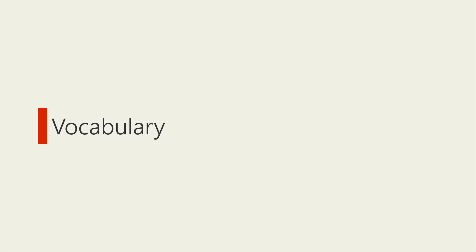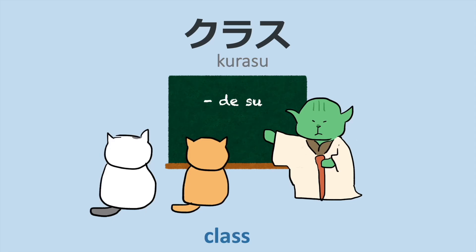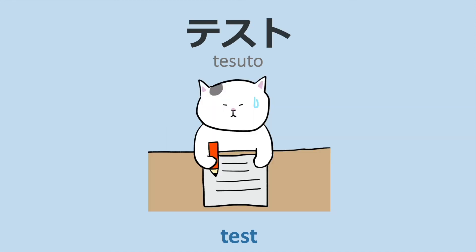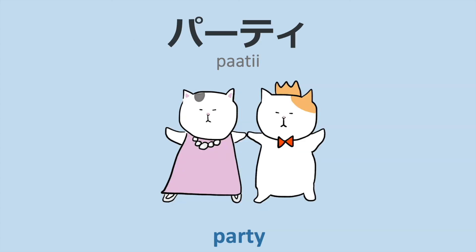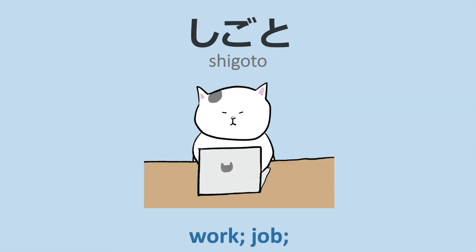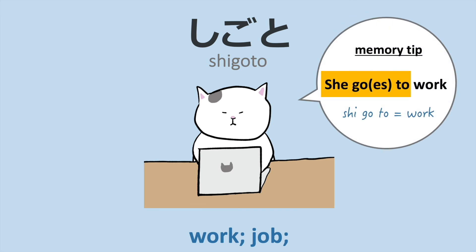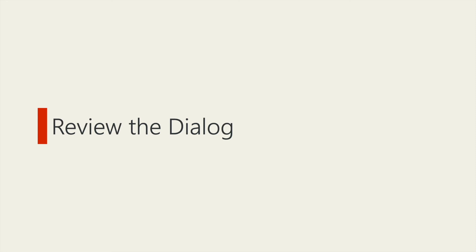Let's practice vocabulary. クラス means 'class.' ミーティング means 'meeting.' パーティー means 'party.' 仕事 means 'work' or 'job.' This phrase 'shi-go-to work' may help you remember that 仕事 means work.